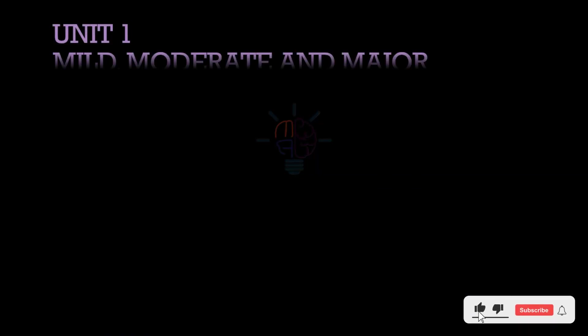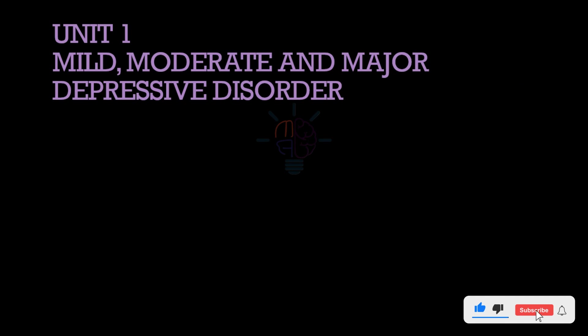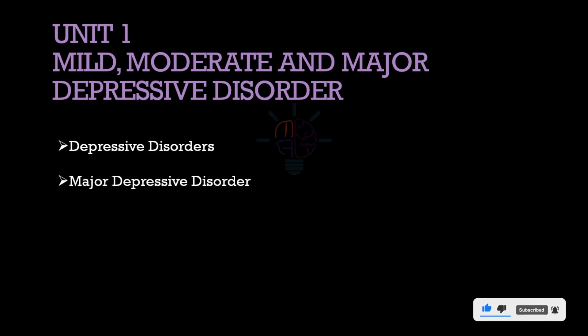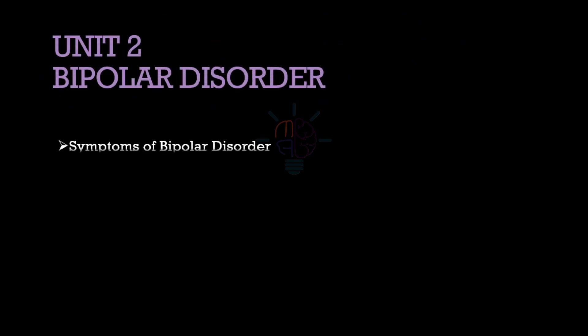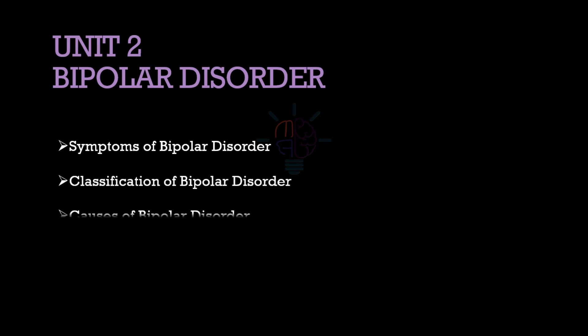From block 3, unit 1: depressive disorders and major depressive disorders. From unit 2: symptoms of bipolar disorder, classification of bipolar disorder, and causes of bipolar disorder. You can omit unit 3 and unit 4 from this block.